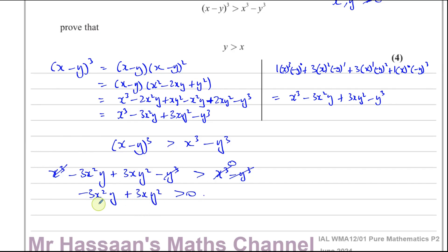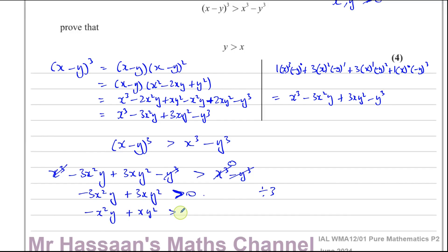Dividing both sides by 3 is fine because it's a positive number — dividing an inequality by a positive number does not change the sign. This gives minus x squared y plus xy squared is greater than 0. Taking out a common factor of xy, since xy is common to both terms, we get xy times minus x plus y is greater than 0.